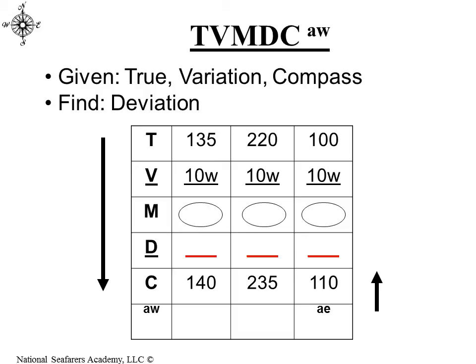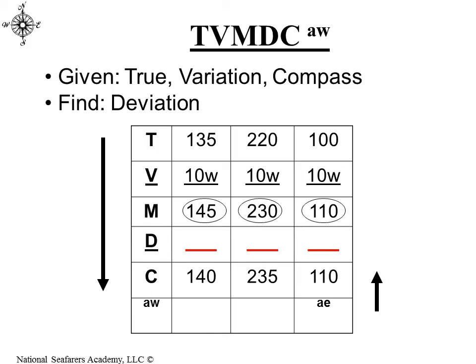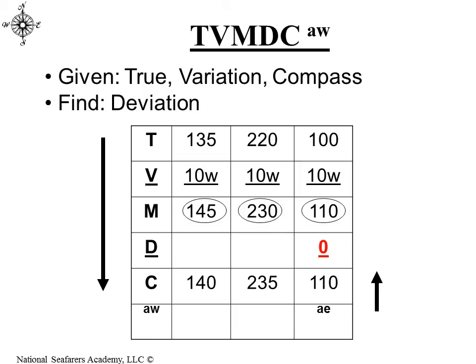You have to be very familiar with all three reference systems, such that if you were given true, variation, and compass, and you had to work in the middle to determine magnetic and deviation, you have to be able to do that. Starting with true and applying variation gives us 145 magnetic, 230 magnetic, and 110 magnetic. We can see the difference between magnetic and compass in each case. On 110 magnetic equals 110 compass — that's zero deviation. From 235 compass to 230 magnetic is a difference of five, and to get from 230 to 235 you'd have to add, so that would be westerly. And going from 145 to 140 is also a difference of five, but you'd subtract five, so that means it's easterly deviation.